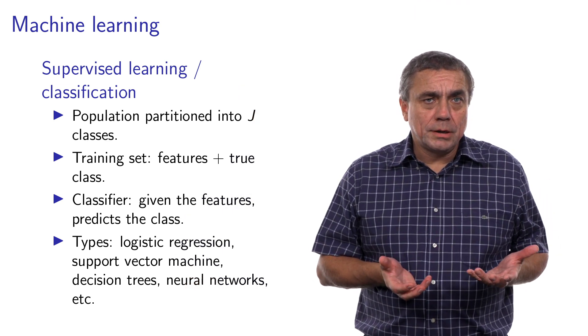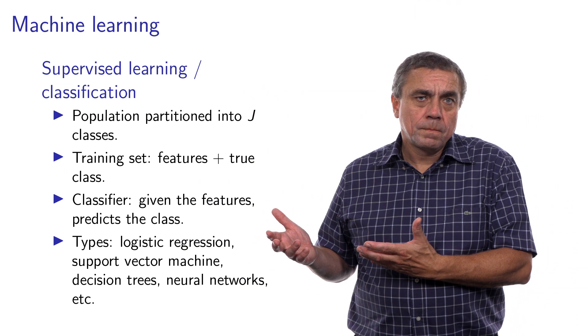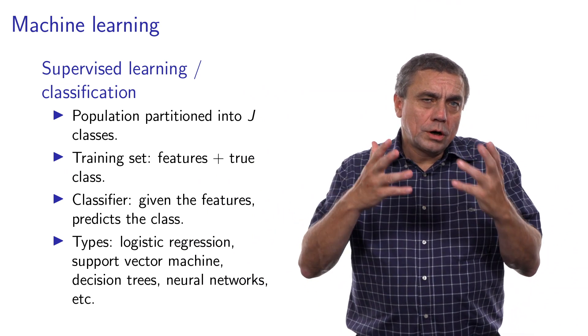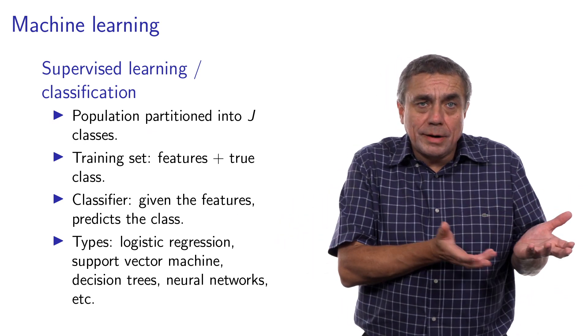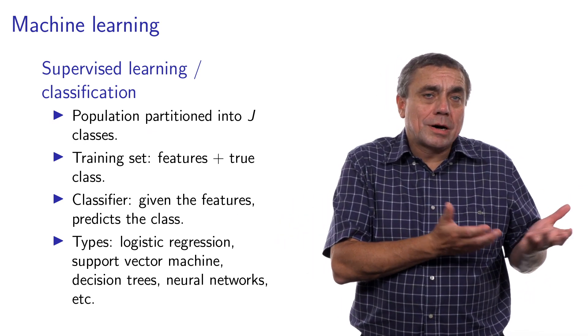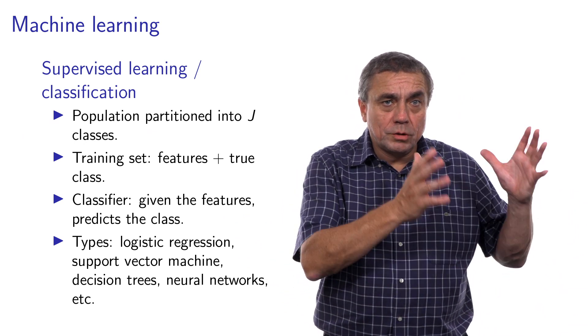The vocabulary of machine learning is different from the vocabulary that we use in discrete choice. The relevant machine learning methodology for choice data is called supervised learning, or classification. In this context, they partition the population into capital J classes.